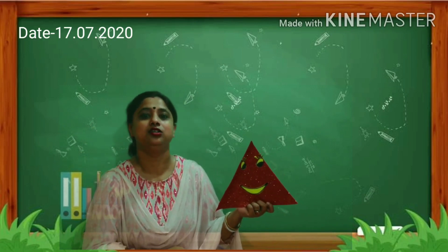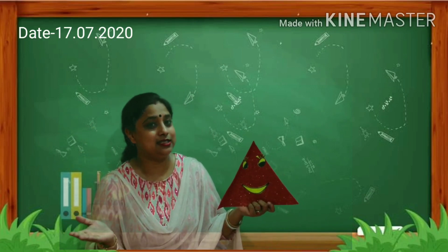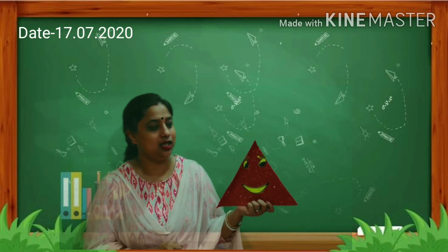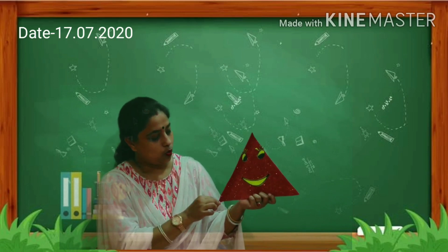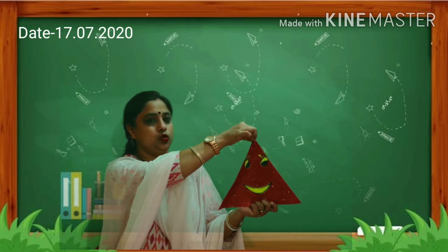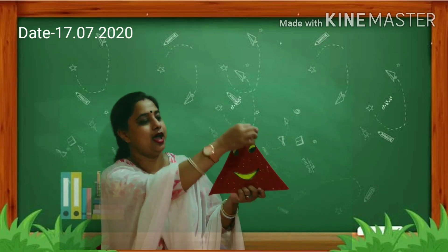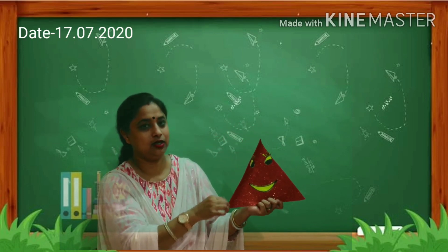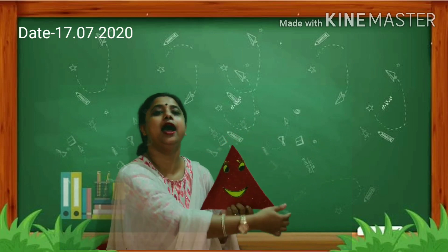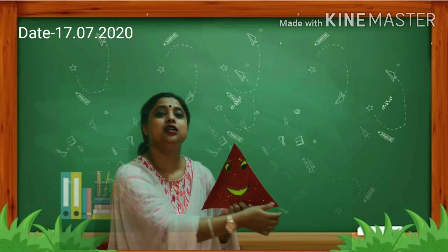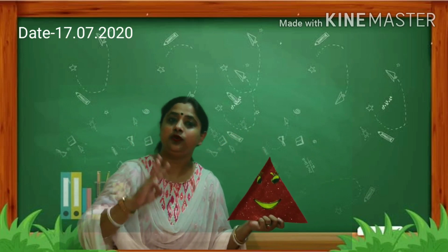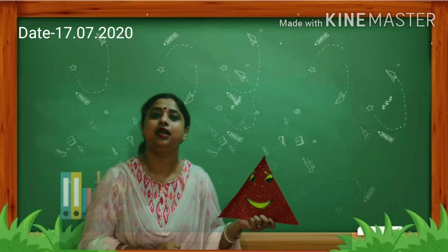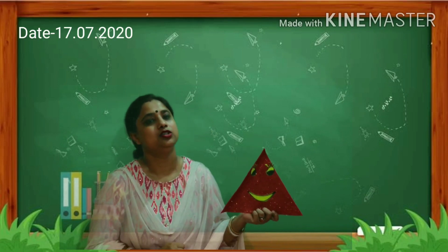One, two, and three. So there are three sides and three corners in a triangle.